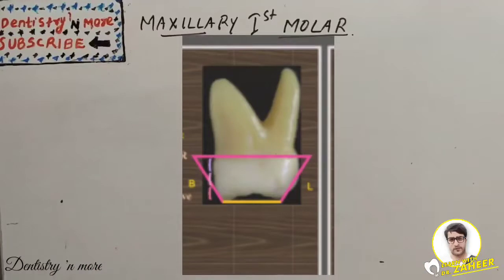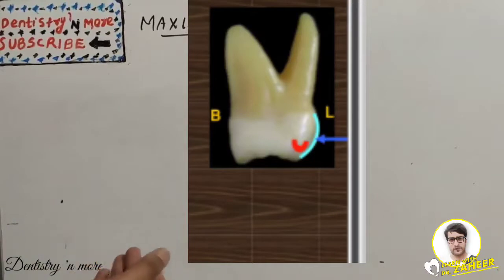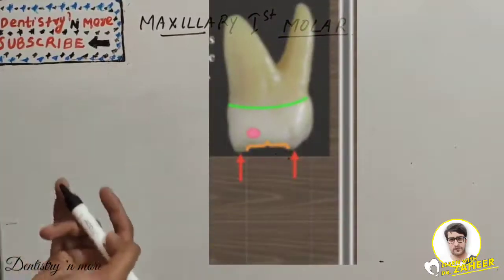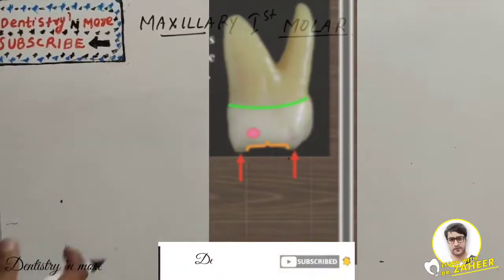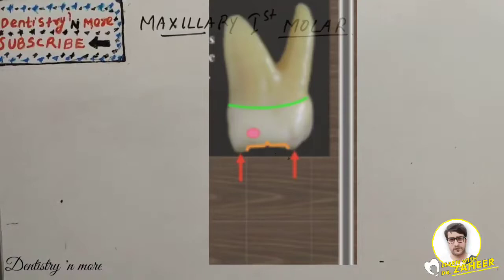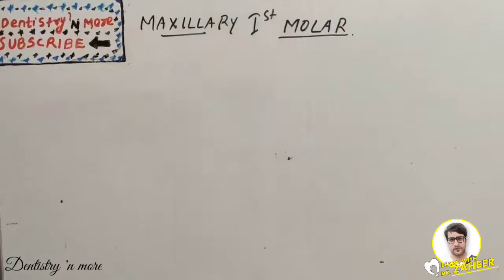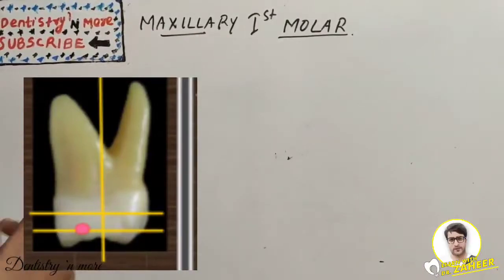The lingual outline is convex with the crest of curvature at the middle one-third, and dips inward to illustrate the tubercle. The occlusal outline is represented by the mesio-lingual and mesio-buccal cusps. There is an irregular mesio-marginal ridge which curves cervically. The cervical outline is irregular and convex occlusally. The mesial contact area is at the junction of the middle and occlusal one-third, buccal to the center.